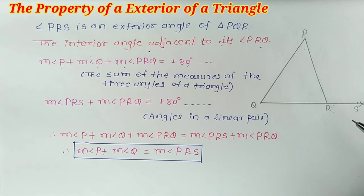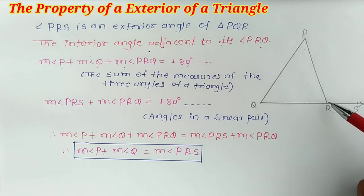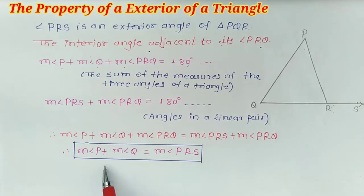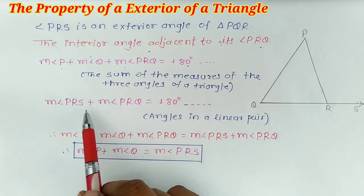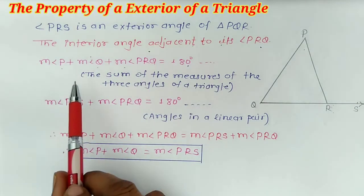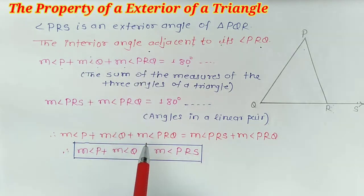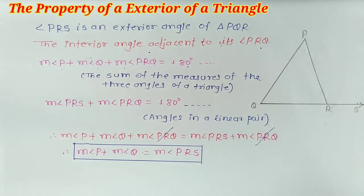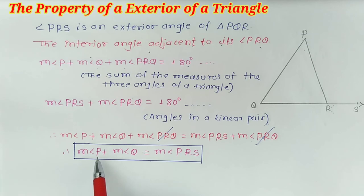The measure of angle PRS and measure of angle PRQ — both two angles form a linear pair, and are always supplementary. So, measure of angle P plus measure of angle Q plus measure of angle PRQ is equal to measure of angle PRS plus measure of angle PRQ. Subtracting measure of angle PRQ from both sides, measure of angle P plus measure of angle Q is equal to measure of angle PRS.